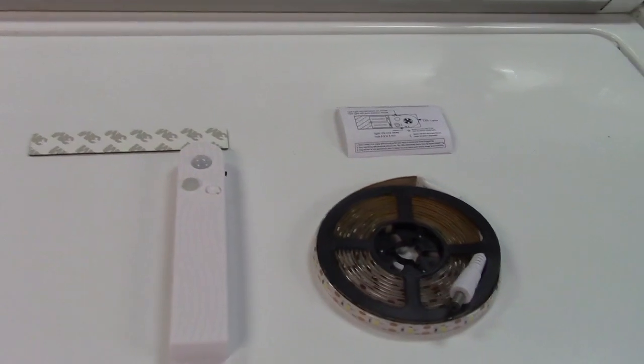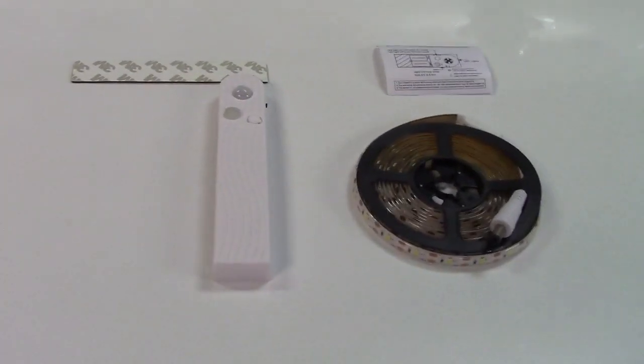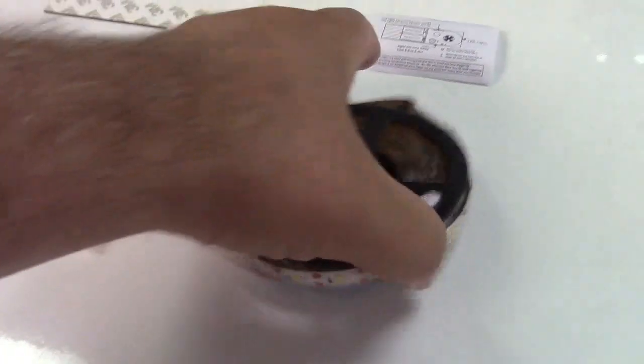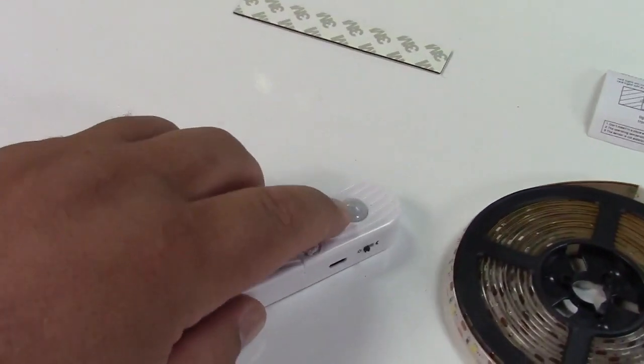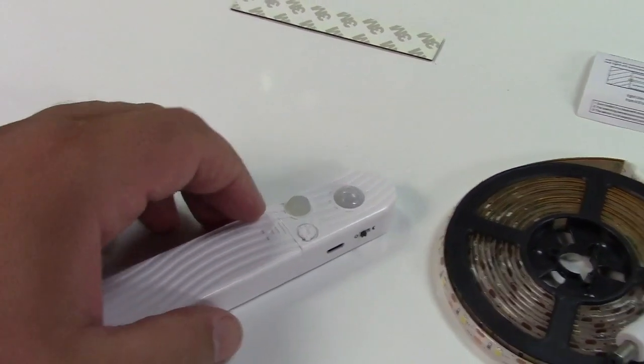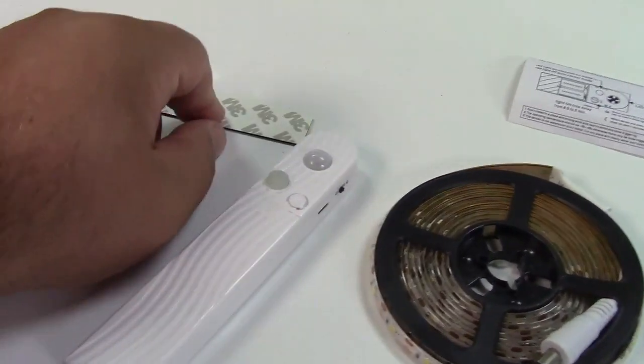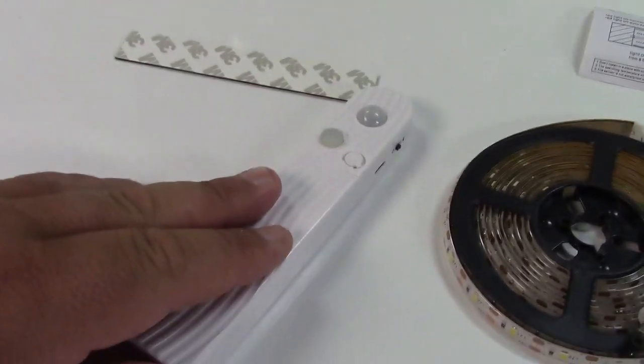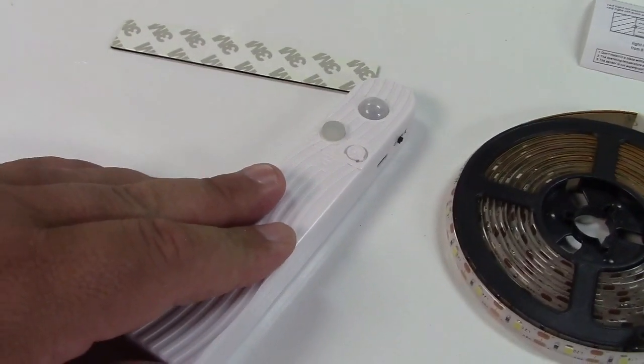In the box, you get a two-pack. This is just one of the two. You get the light strip itself with the controller, which has a sensor on it as well as a switch, some 3M tape, and a little instruction manual. What's very nice about this is it has very versatile power options.